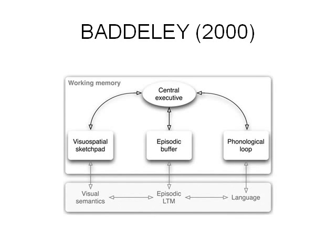In 2000, Baddeley published a revised version of working memory. Here's the diagram — it looks pretty familiar. There's the central executive at the top, the visuospatial sketchpad and the phonological loop. But in the middle we've got a new slave system: the episodic buffer. Baddeley had been doing research on patients with brain damage who couldn't use their phonological loop and visuospatial sketchpad to store long-term memories, yet they still seemed to be able to recall stories. This led Baddeley to think that there was a mysterious third slave system.